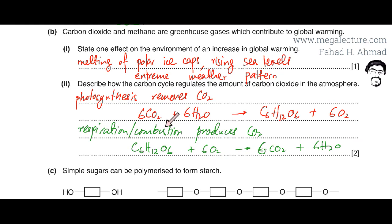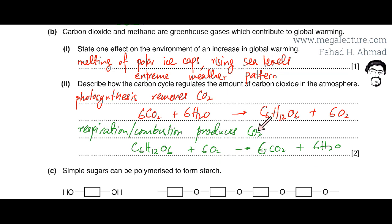Another reaction that produces carbon dioxide is combustion. Fuels are burnt in thermal power plants, cars, trains, etc., all producing large amounts of carbon dioxide. So photosynthesis removes CO₂ from the atmosphere, while respiration and combustion are the processes that produce or increase the amount of carbon dioxide present in the atmosphere.